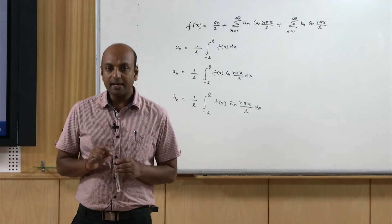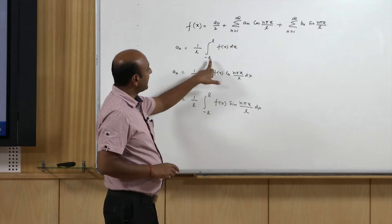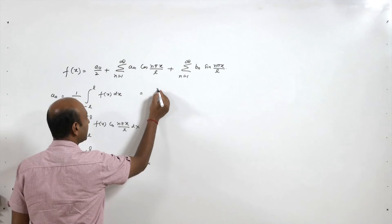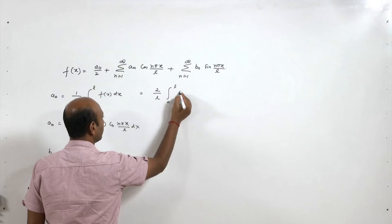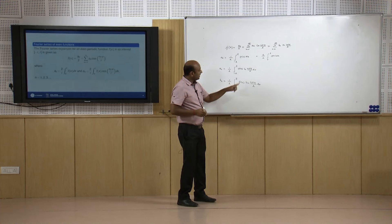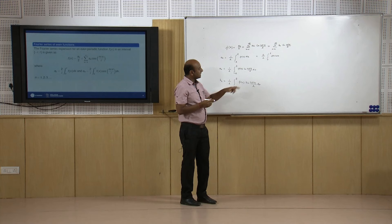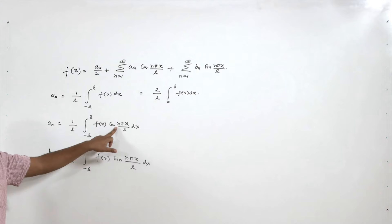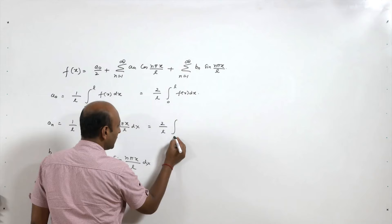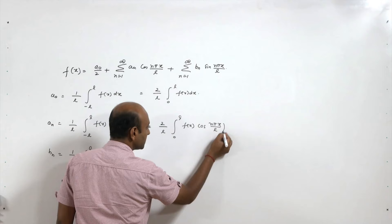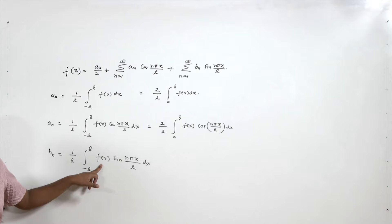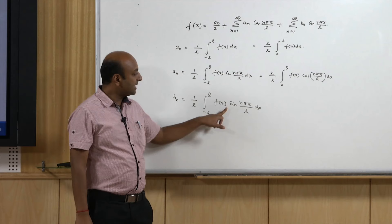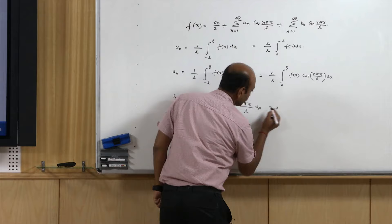Now suppose the function whose Fourier expansion is to be found is an even function. Then the integral from -l to +l of f(x) dx = 2 times 0 to l by the property of definite integrals. Cosine is an even function and f(x) is even, so even times even is even, giving aₙ = (2/l) ∫₀ˡ f(x) cos(nπx/l) dx. Since f(x) is even and sine is odd, even times odd is odd, so bₙ = 0.